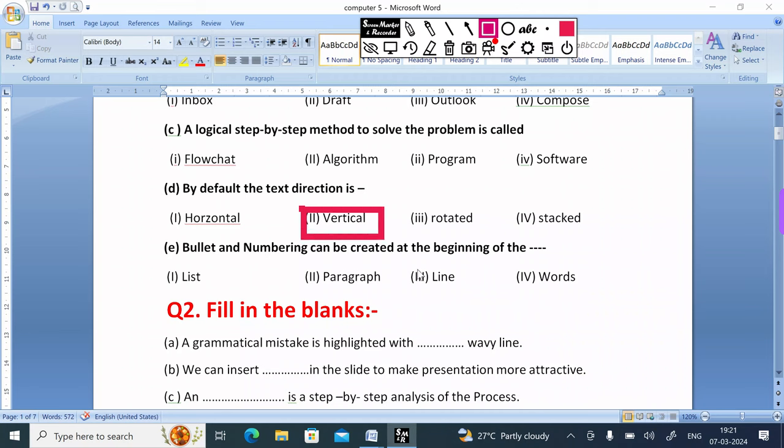Number E: Bullets and numbering can be created at the beginning of the: 1 list, 2 paragraph, 3 line, 4 word. The correct answer is option 1, list.